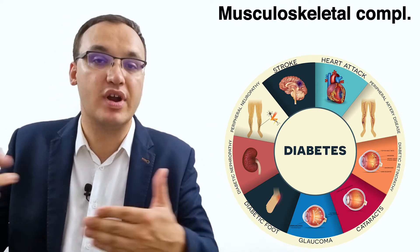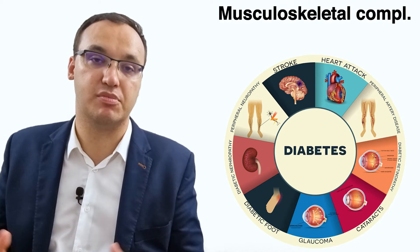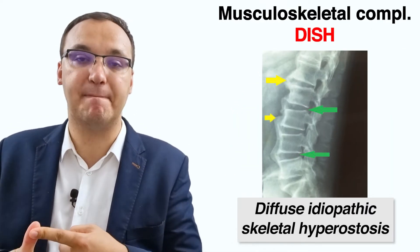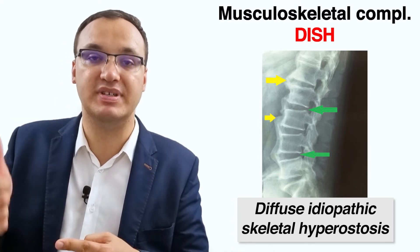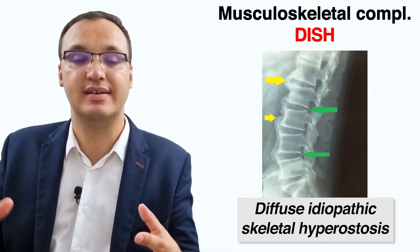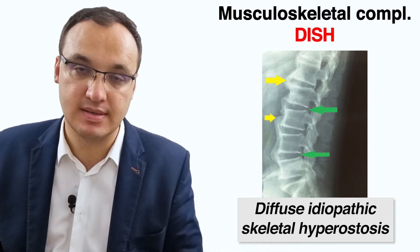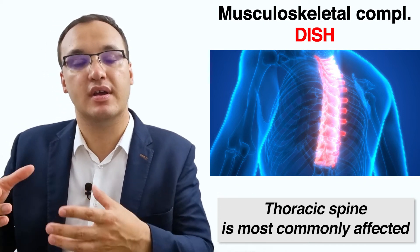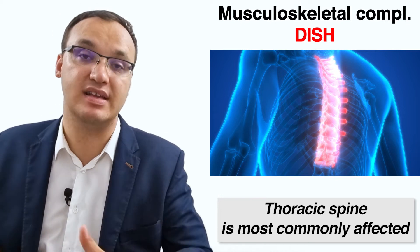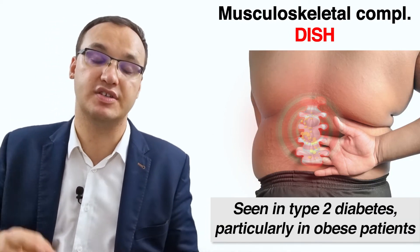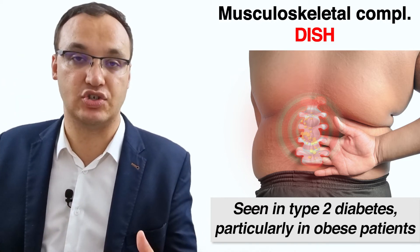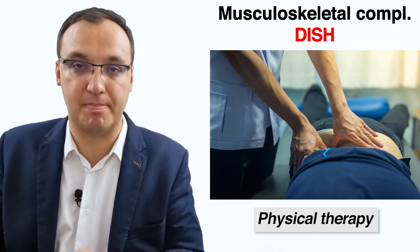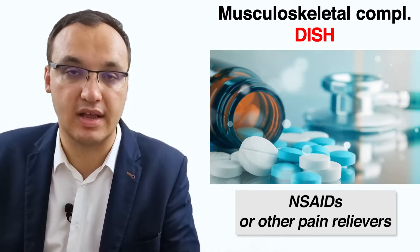Some complications have a known direct association with diabetes, while others have only a possible relationship. Diffuse idiopathic skeletal hyperostosis, or DISH, is a non-inflammatory disorder diagnosed with a lateral spine X-ray showing calcification of the spinal ligaments, with the thoracic spine most commonly affected. DISH is more prevalent among diabetic patients than non-diabetic patients, and is frequently associated with type 2 diabetes, particularly in obese patients. Patients complain of stiffness in the neck and back with decreased range of motion, and treatment is physical therapy and non-steroidal anti-inflammatory drugs.